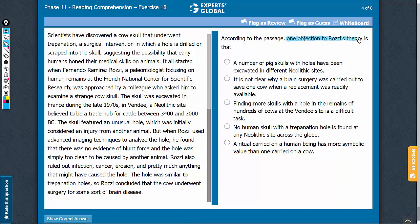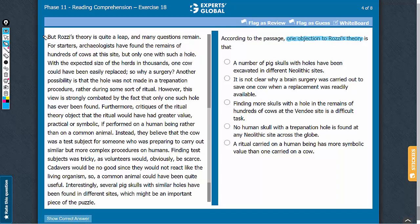What is one of the objections to Rosy's theory? Where do we have this reference? We have this reference in the second paragraph where it says that Rosy's theory is quite a leap and many questions remain. One of the objections mentioned here is that if one cow could have been easily replaced, why was a surgery conducted? So let's look at the answer choices in this context.